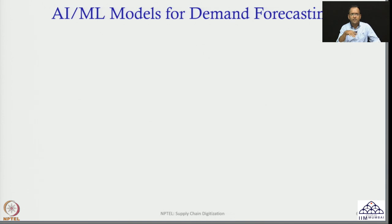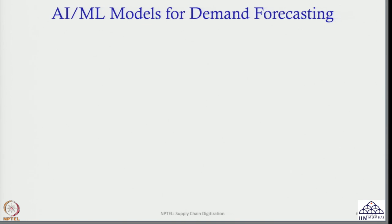Let us now spend some time finding out which AIML models are predominantly used for demand forecasting. We will list out a few — these are not an exhaustive list, but are predominantly used by demand planners across companies. There can be a few more as well.